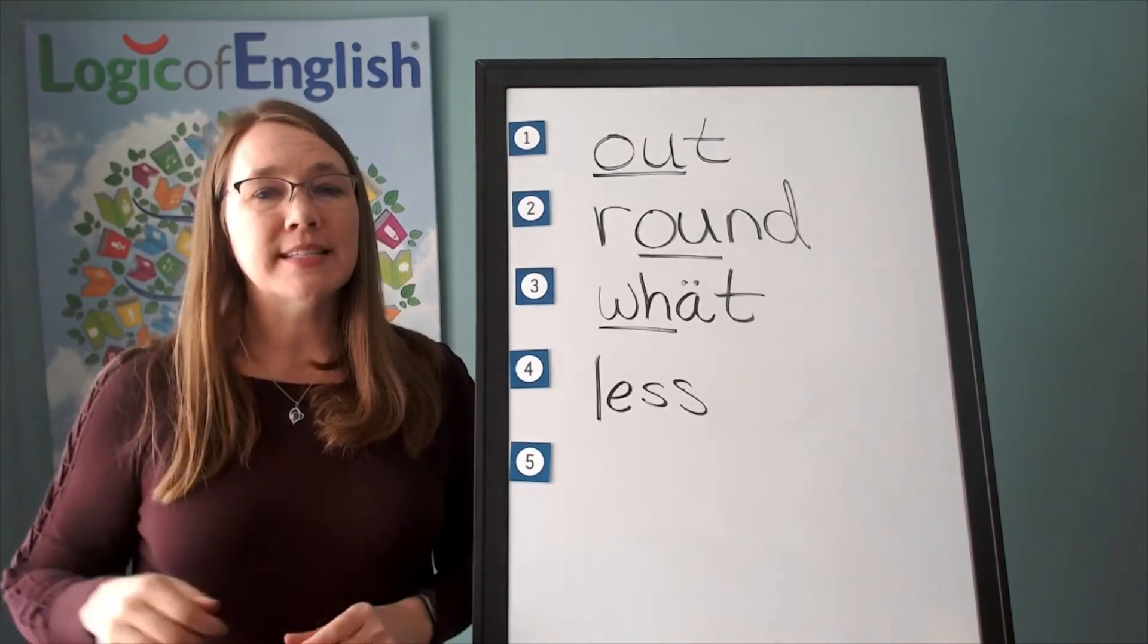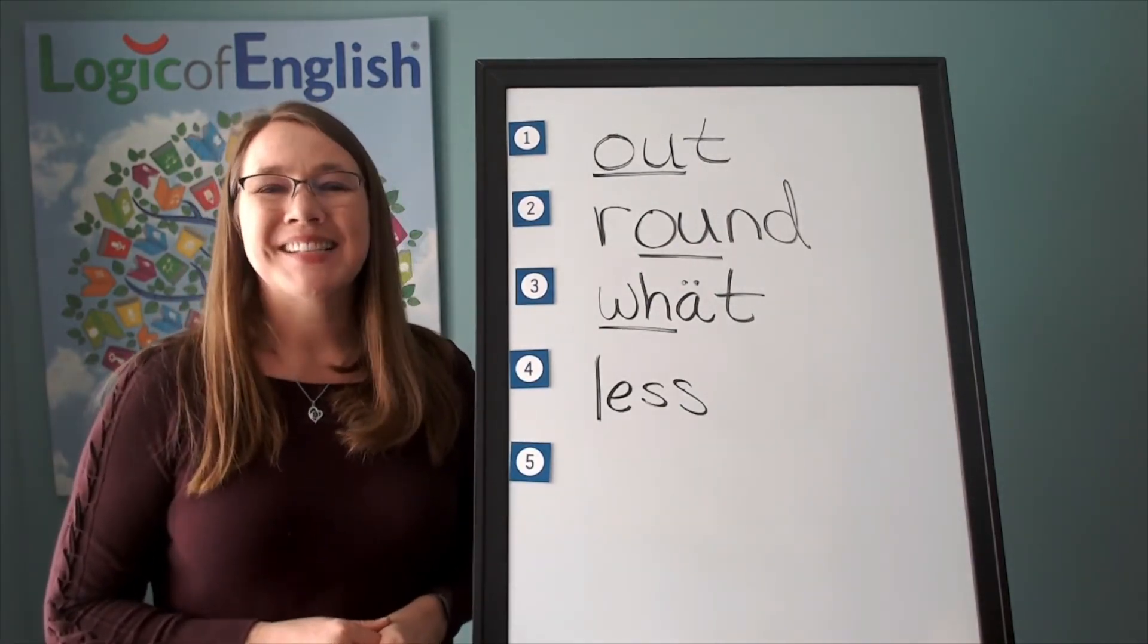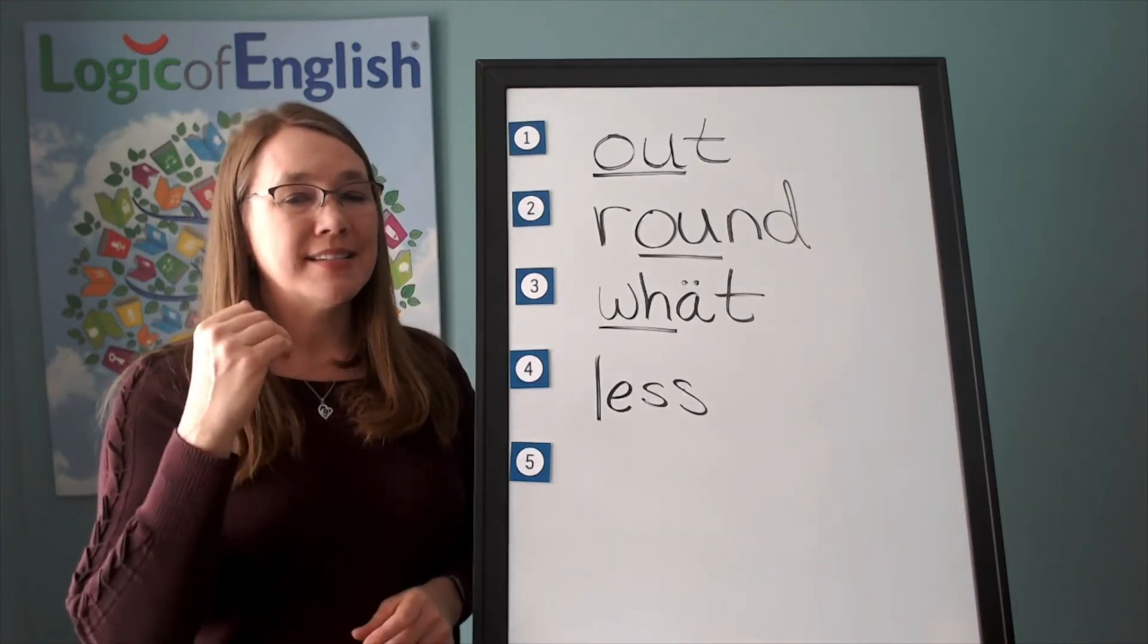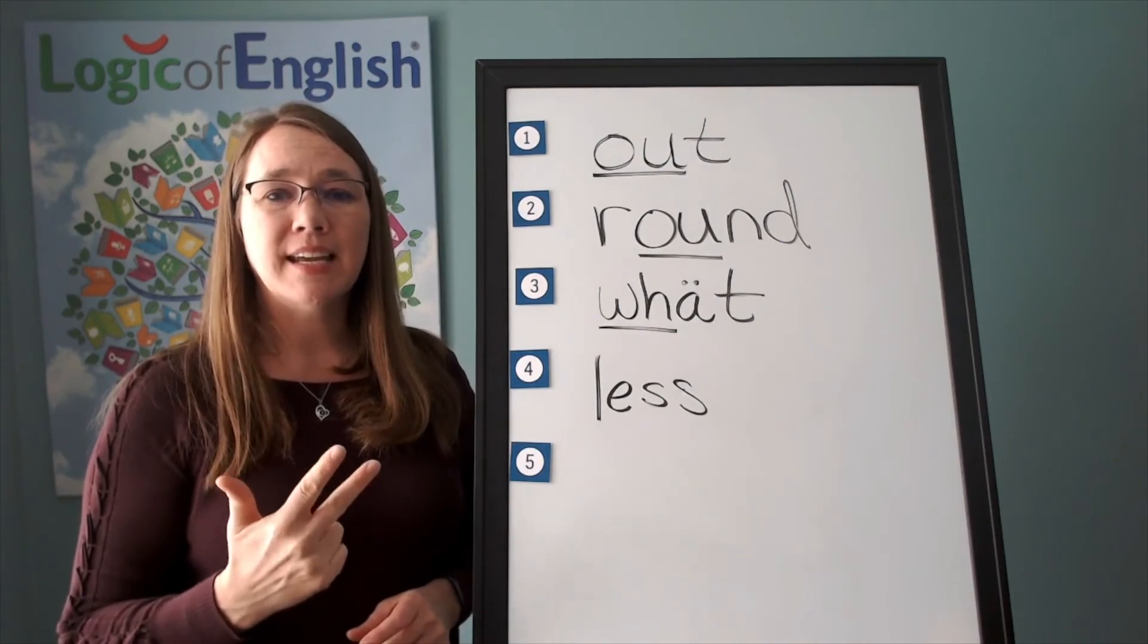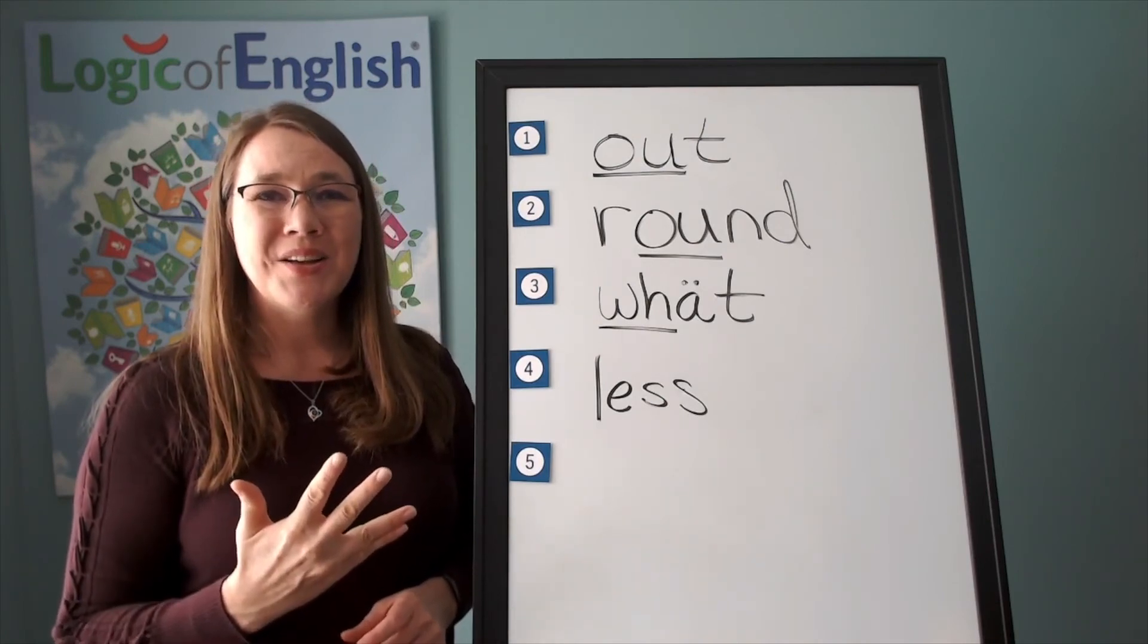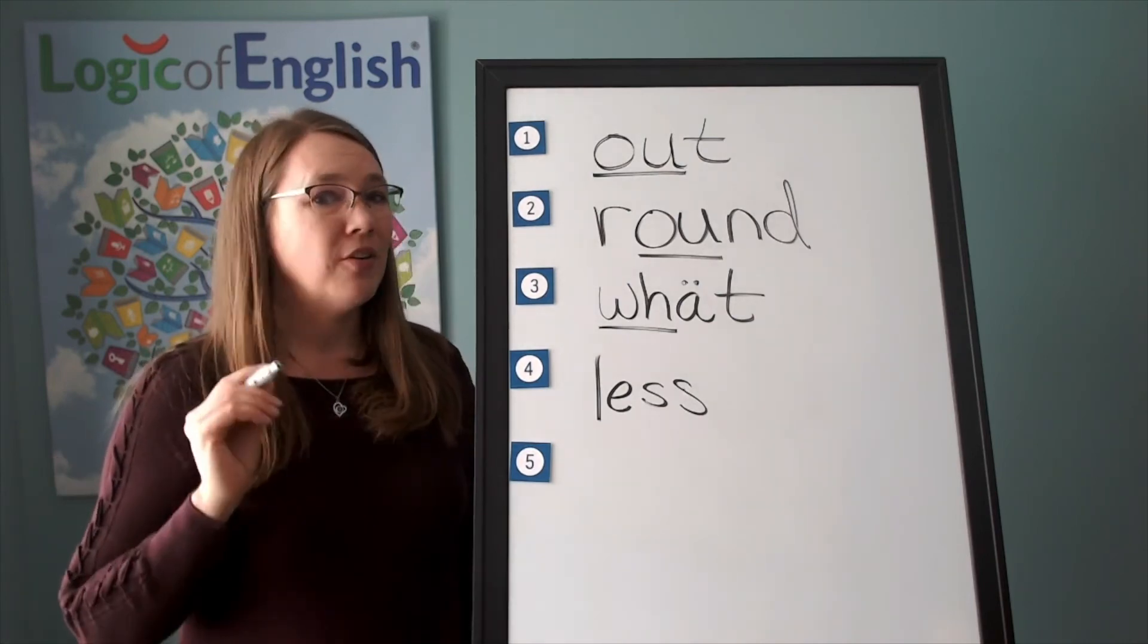The next word is sting. Ouch! I got a sting from the bee. Sting. Go ahead and say sting. Sting. Let's sound it out. S, t, i, n. Very good. Go ahead and write it. Sound it out so you get all the sounds.